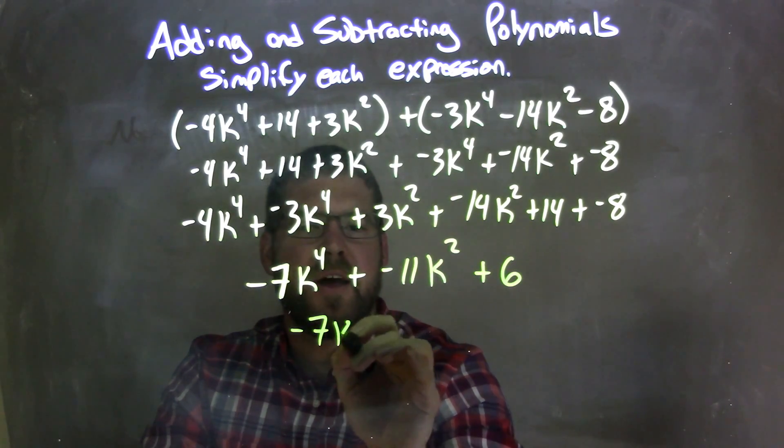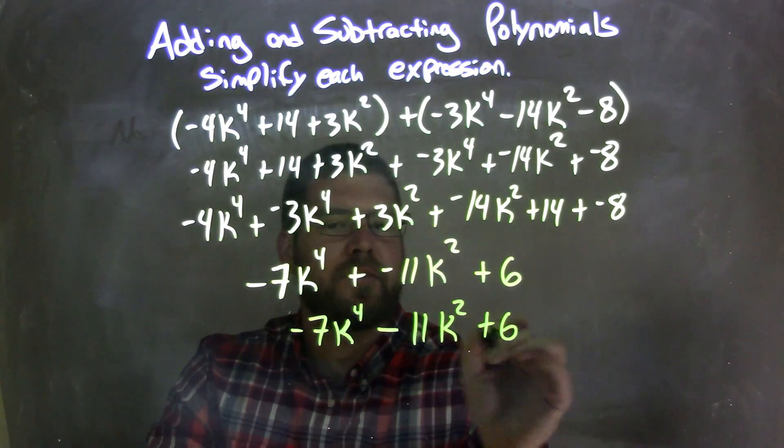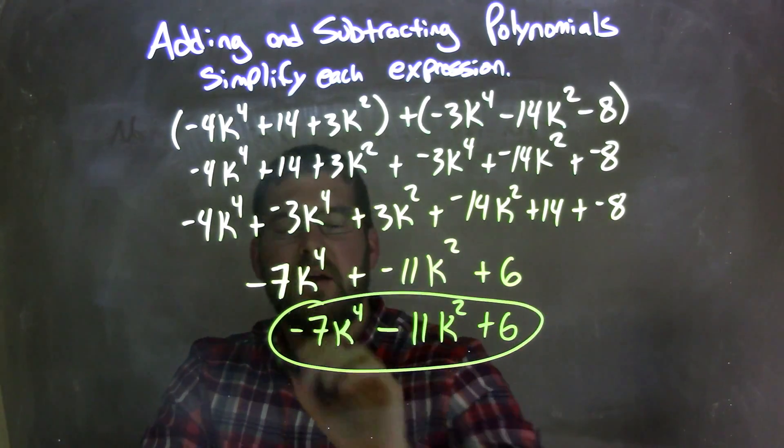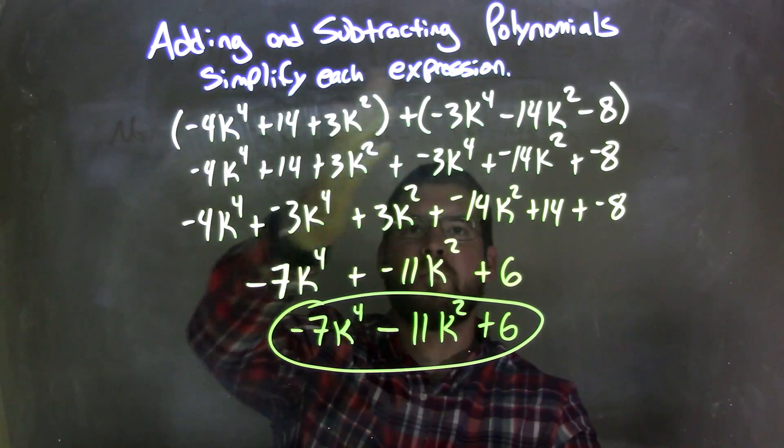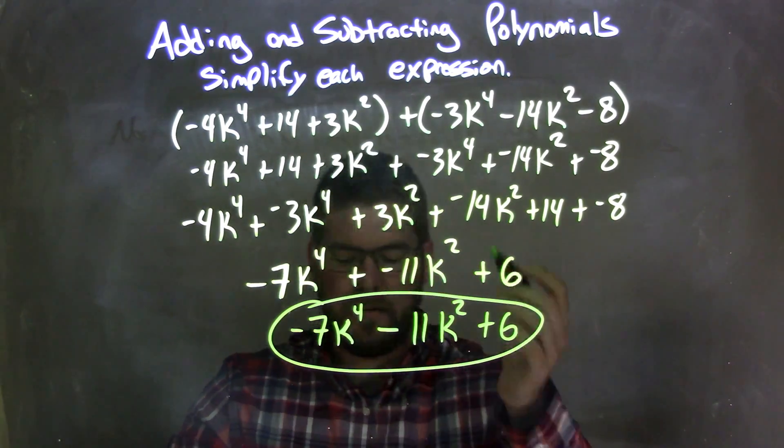plus 6, and there we have it. We have our final answer, and that's negative 7k to the 4th, minus 11k squared, plus 6.